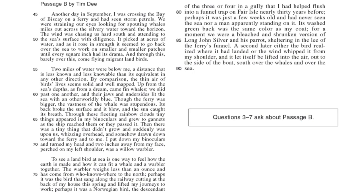For passage B, if you're going to use Google summary, here's what mine was: I wrote 'harsh' and 'birds' for the harsh conditions and the bird described in paragraph one. For paragraph two, I wrote 'wow' — it seems like the author was awestruck with the majesty of the landscape. Then 'origin of the bird,' and finally 'bird is gone.' That was it.